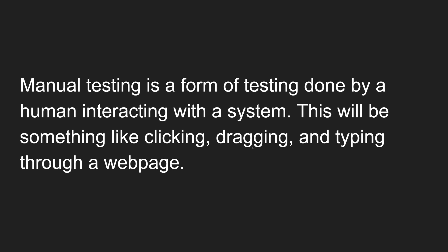Manual testing is a form of testing done by a human interacting with a system. Humans — users or testers — interact with the application by clicking, dragging, and typing through a web page. You go through all parts of the web application through human interaction, checking and testing the application. This is manual testing — you are manually testing the code.